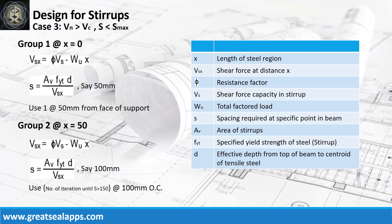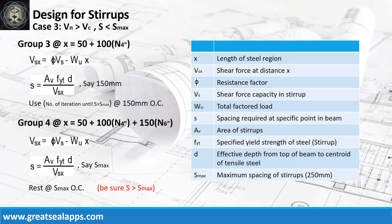Use case 3 when shear from nominal load is greater than shear capacity of concrete and the initial spacing from web strength is less than maximum spacing of stirrup. For group 1, use a single 50 mm as initial spacing away from the face of support. For group 2, iterate the web strength procedure until the spacing of stirrup is greater than or equal to 150 mm, and use the number of iterations for 100 mm spacing. For group 3, continue iterating web strength procedures until the spacing of stirrups is greater than or equal to maximum stirrup spacing, and use the number of iterations for 150 mm spacing. For group 4, as a final check of web strength, ensure that the spacing of stirrups is greater than maximum stirrup spacing and use the rest at maximum spacing.